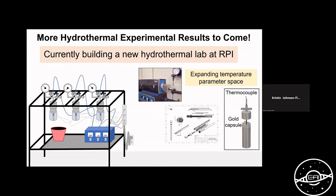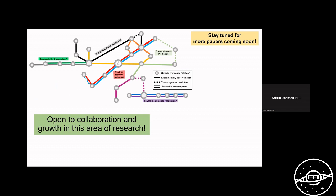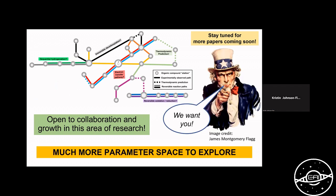Additionally, because today my focus was more on published results, there's going to be more hydrothermal experiments to come. I'm building a new hydrothermal lab at RPI, and I'll be pursuing a lot of different temperature and parameter space, combining that with electrochemistry, and seeing how that influences different reaction paths. So stay tuned, see what's coming on the horizon, and know that for this type of experimental mapping, I'm very open to collaboration and growth in this area of research. We go back to our Uncle Sam. We want you to help look at this parameter space and help explore. There's too much in any sort of cartography of organic reactions for one person to do alone. So collaboration will be key if we want to move forward.